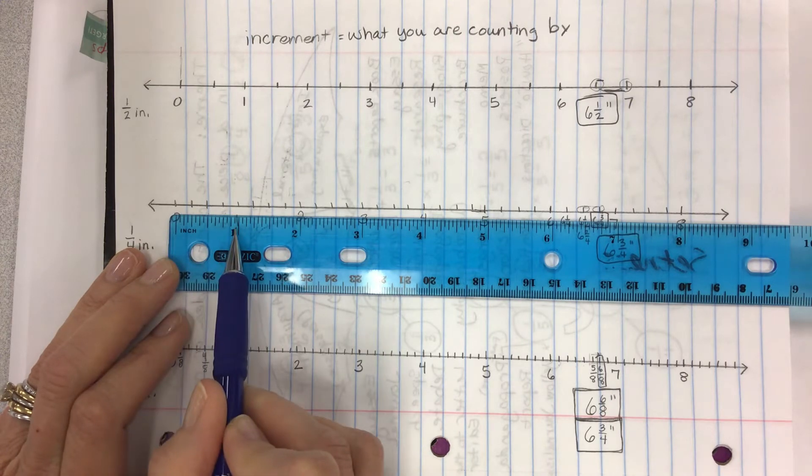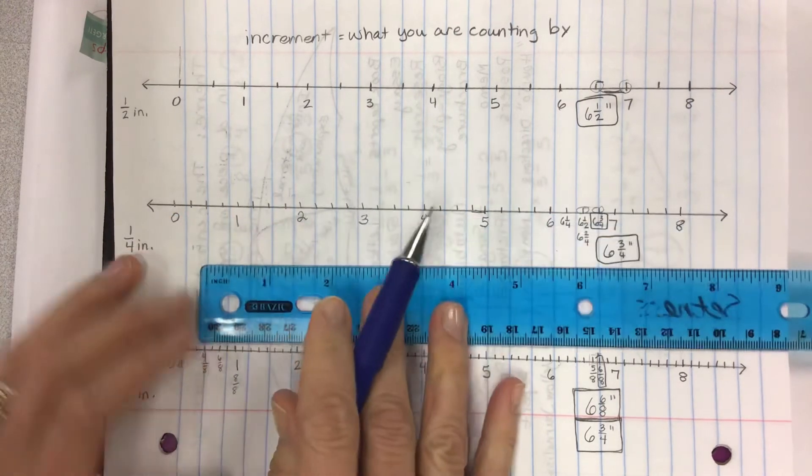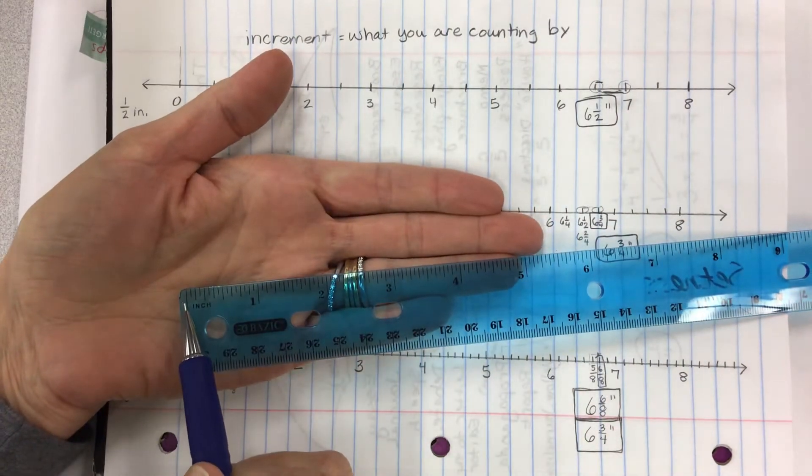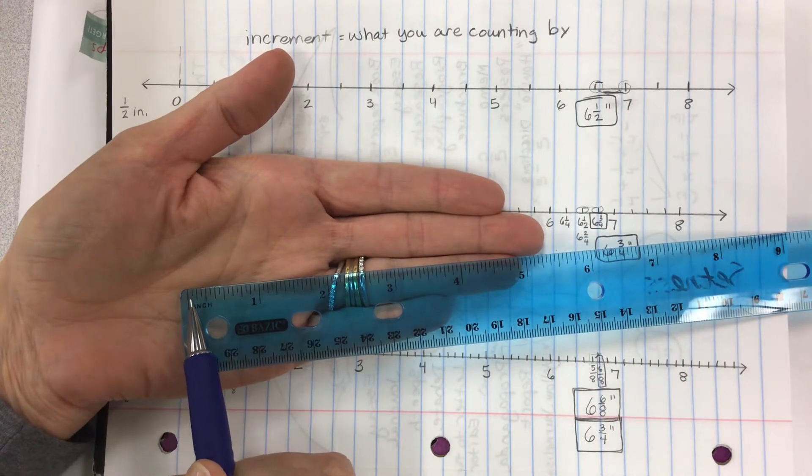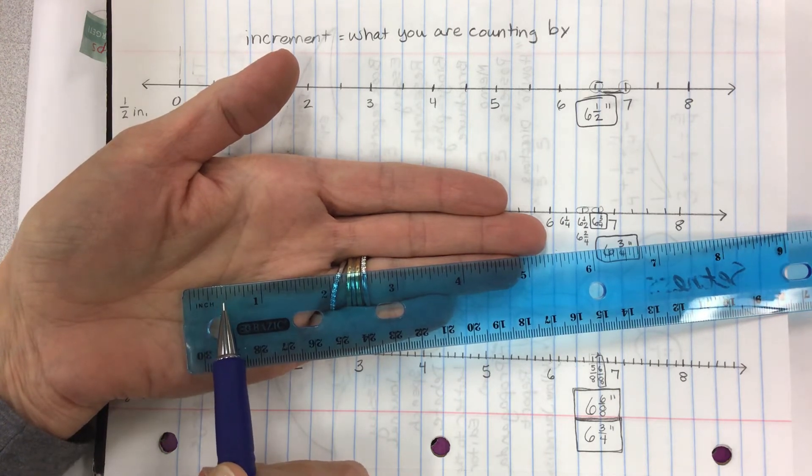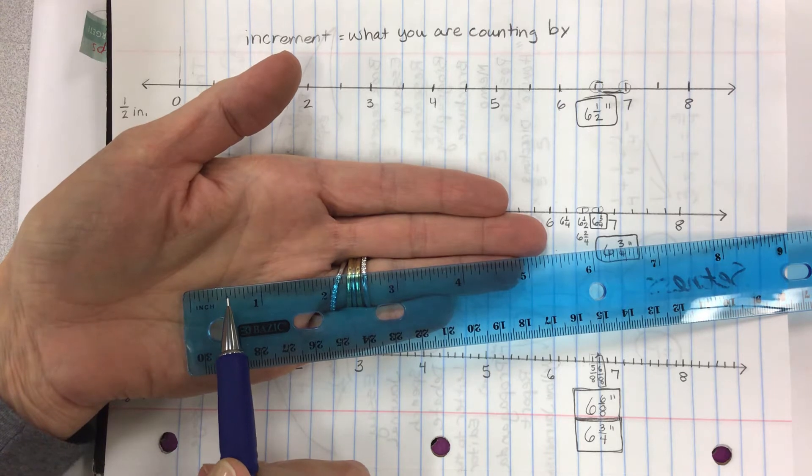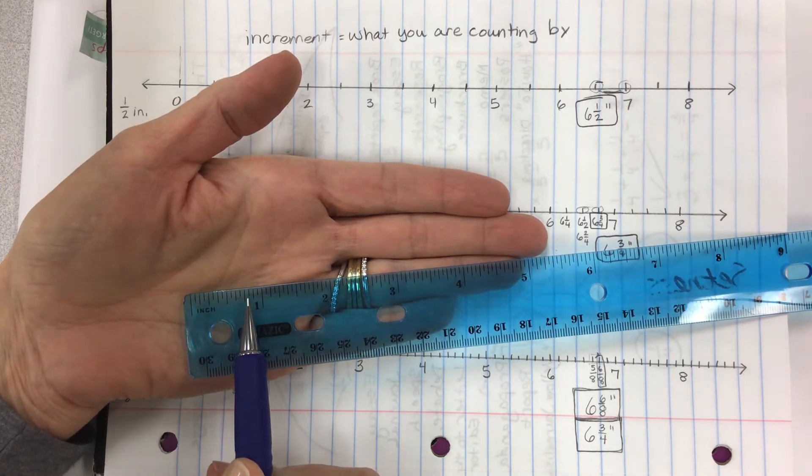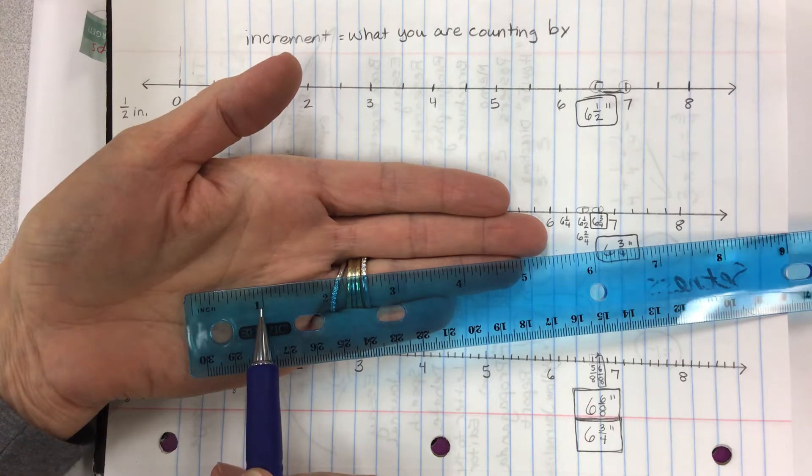But when you count your increments, you're gonna be using the ruler and looking for every fourth of an inch. There are 16 lines in here. So when you look on your ruler, you look for every fourth line. So this is zero, and then one, two, three, four. That's the quarter inch. Five, six, seven, eight. That's the half inch. Nine, ten, eleven, twelve. That's the three quarters of an inch. And then thirteen, fourteen, fifteen, sixteen. That's the full inch.